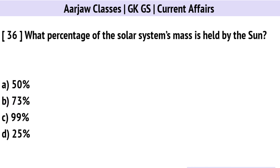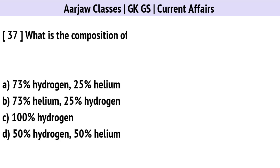What percentage of the solar system's mass is held by the Sun? Correct option is C: 99%.